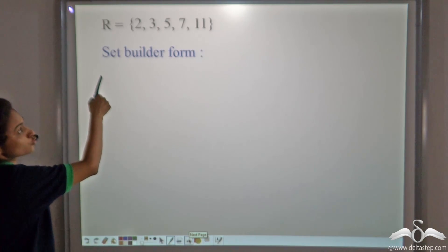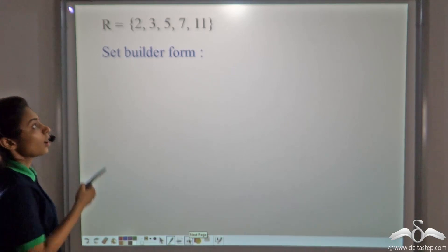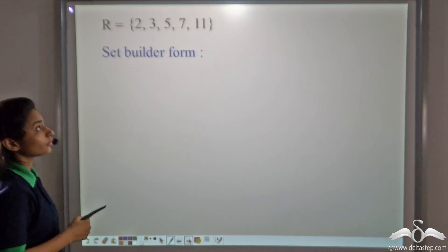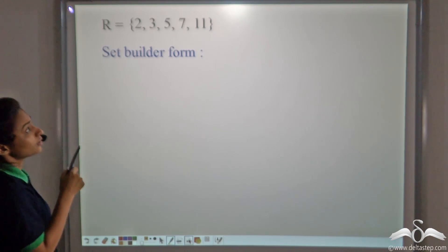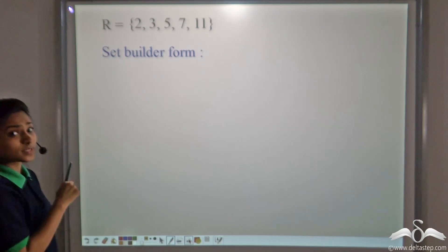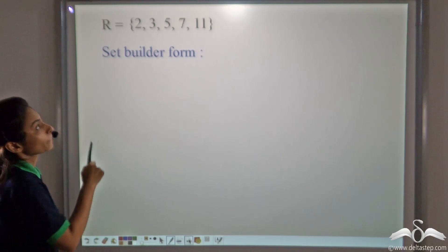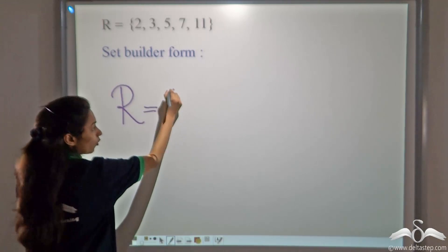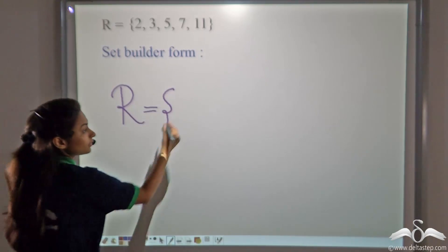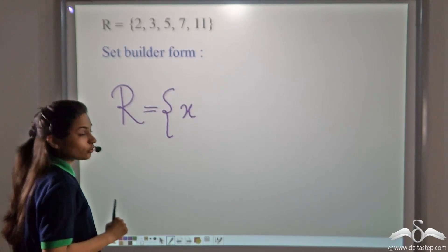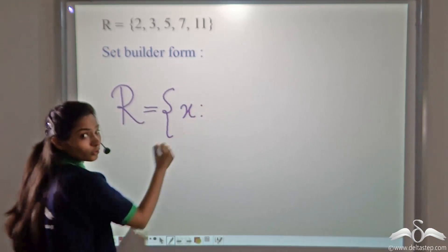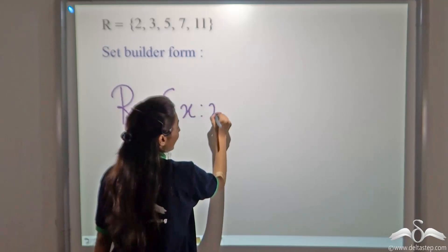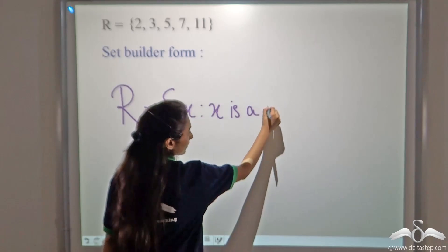Now, R is a set of elements 2, 3, 5, 7 and 11. How will you write it in set builder form? First of all, understand the pattern. What does the pattern want to denote? It's 2, 3, 5, 7 and 11. Are these odd numbers? No, 9 is missing. So these are prime numbers. So how will we denote it in set builder form? Write R is equal to, open curly brackets. x — this is the variable we use to denote — such that, colon represents 'such that'. Now what property does this have? Prime numbers. So we will write: x is a prime number.